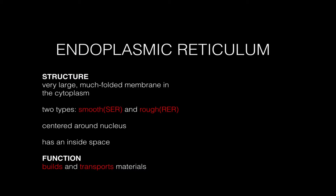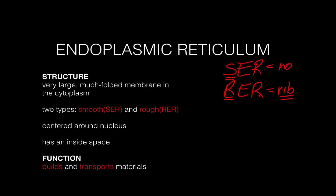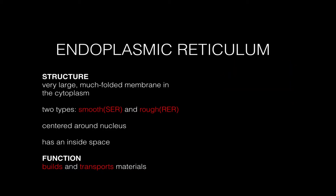Let's start with the endoplasmic reticulum, also referred to as the ER. The ER basically comes in two flavors or two structures: we have the smooth ER and we have the rough ER, and the difference between smooth and rough is whether or not there are ribosomes attached. The endoplasmic reticulum is a folded membrane sac that is centered on the nucleus but extends throughout the cell, and it has an inside space that's separate from the cytoplasm. Its function is to build and transport materials, depending on which type it is.